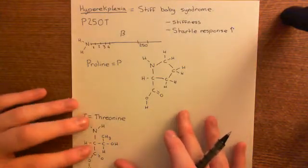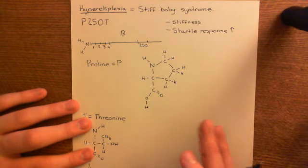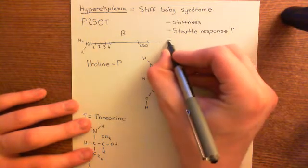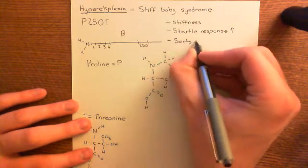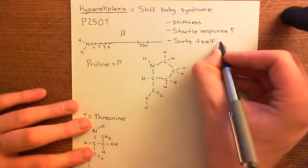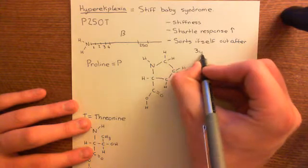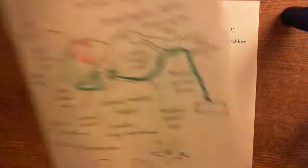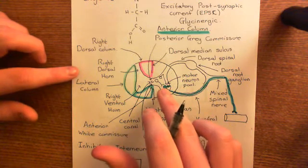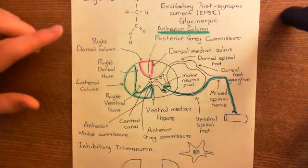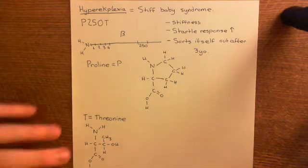What's nice about this disease is that if the baby survives to three years of age, then generally it sorts itself out. It's not an adult illness — and that's not because they all die. Something changes after three years; the body adapts. The body realises there is a problem — that the alpha motor neurons aren't receiving enough inhibition — and something changes so that this lack of glycinergic transmission is no longer a problem, though we don't know exactly what that is.